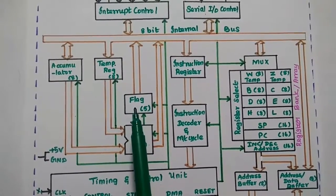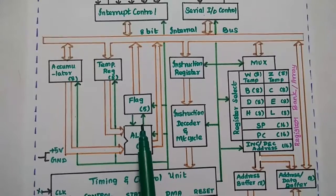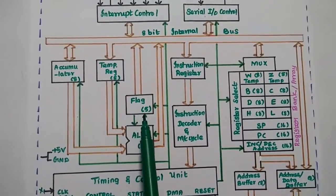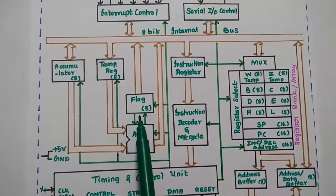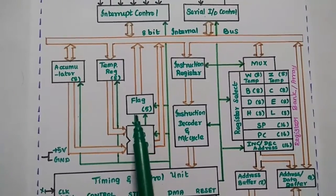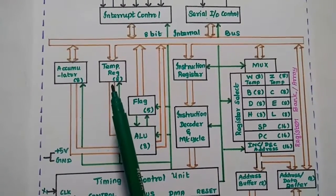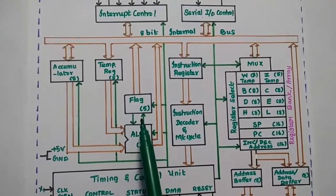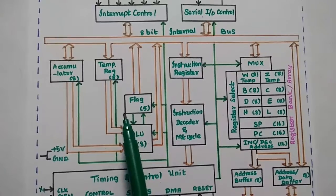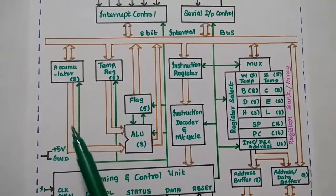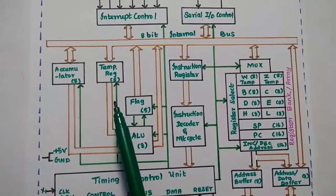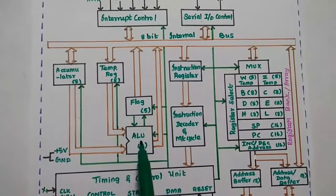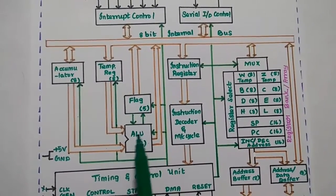The flag register is an 8-bit register, but only 5 bits are defined in the 8085. Next is the temporary register. When performing addition, subtraction, or any ALU operation, two inputs are needed: one from the accumulator and another from the temporary register, which holds data temporarily during arithmetic and logical operations.